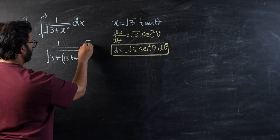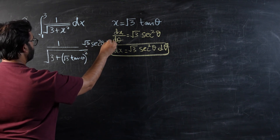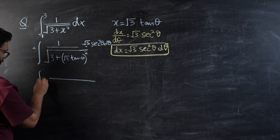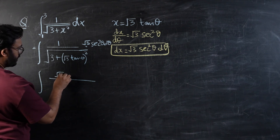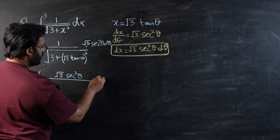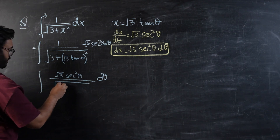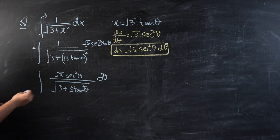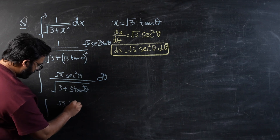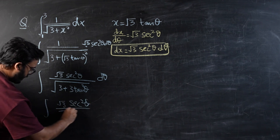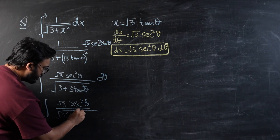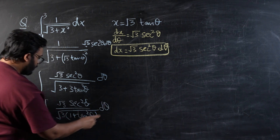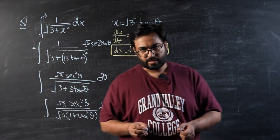After multiplying through, the numerator is √3 sec² θ and the denominator is √(√3 + 3 tan² θ). Now let's take 3 common from the denominator: this gives √(3(1 + tan² θ)). For those of you who know your identities, you can clearly see what's happening — 1 + tan² θ equals sec² θ. Let's simplify this a little bit further.